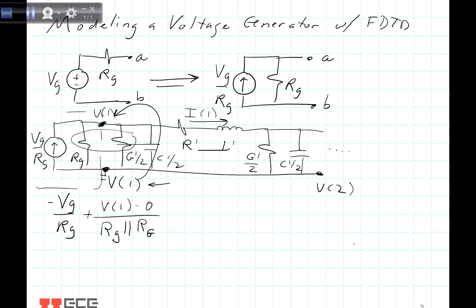Next we add in the current going down through the capacitance, which is C dV/dt. In this case the capacitance is C prime times delta z, and it was divided by 2 because of the symmetric model. And then we have the current going out, plus I of 1, and all of that equals zero.